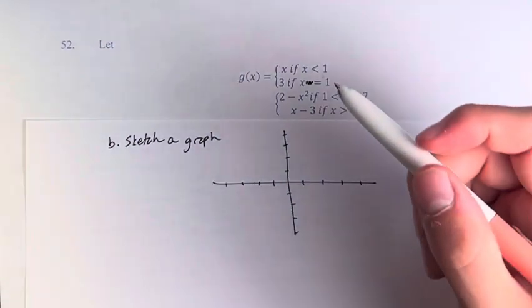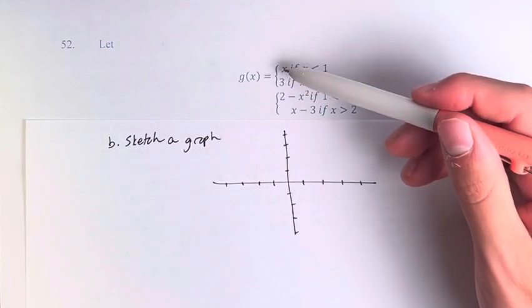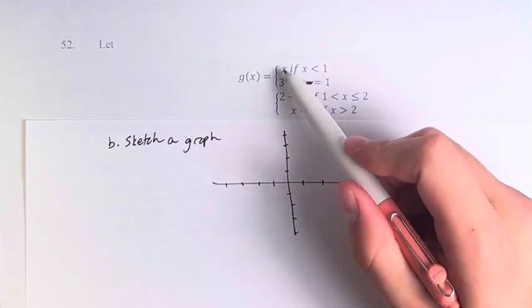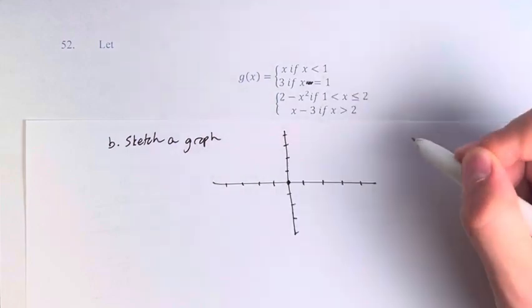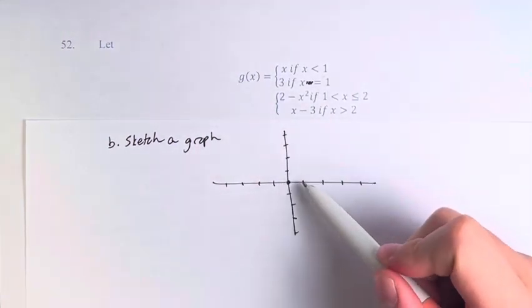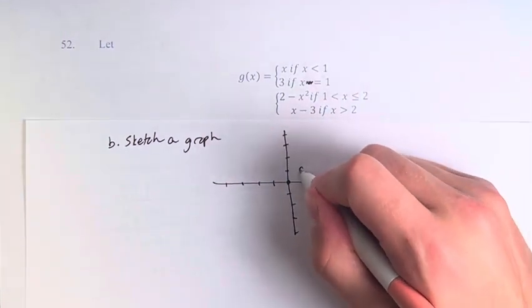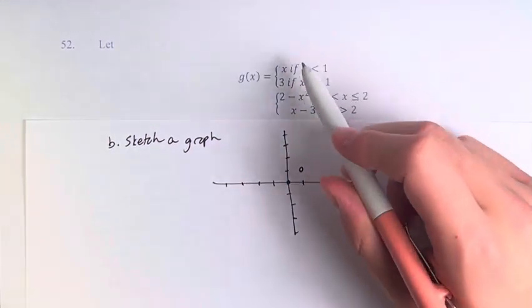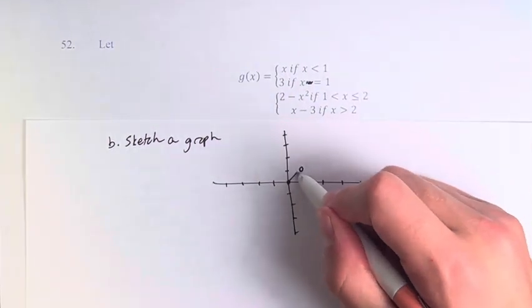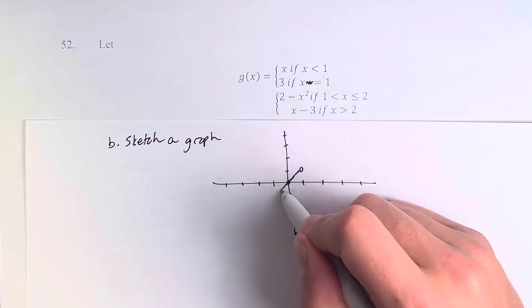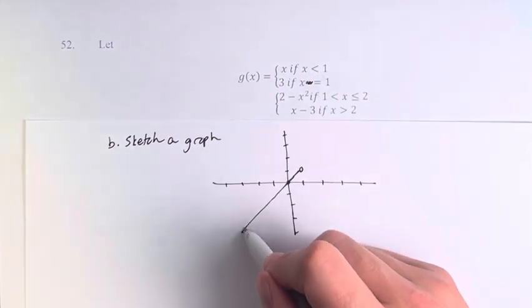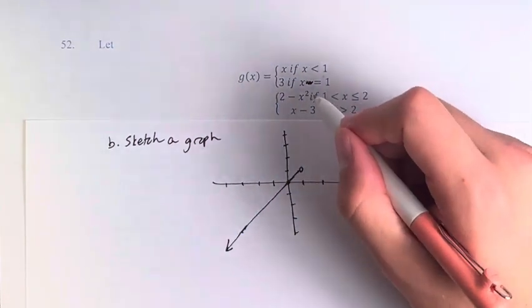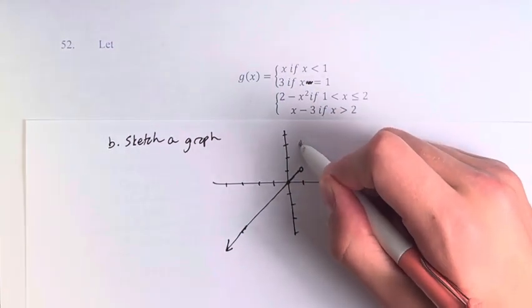So first let's do the easy part: y equals x if x is less than 1. This is a linear function with a y-intercept of 0 and a slope of 1, which means we go to the right 1 and then up 1. At that point here, this is an open circle because at x equals 1 it equals something else. So it starts there, and for all values of x less than 1 going off to infinity, it follows that function. At x equals 1, we have a closed circle at 3 because that's the actual value of the function.